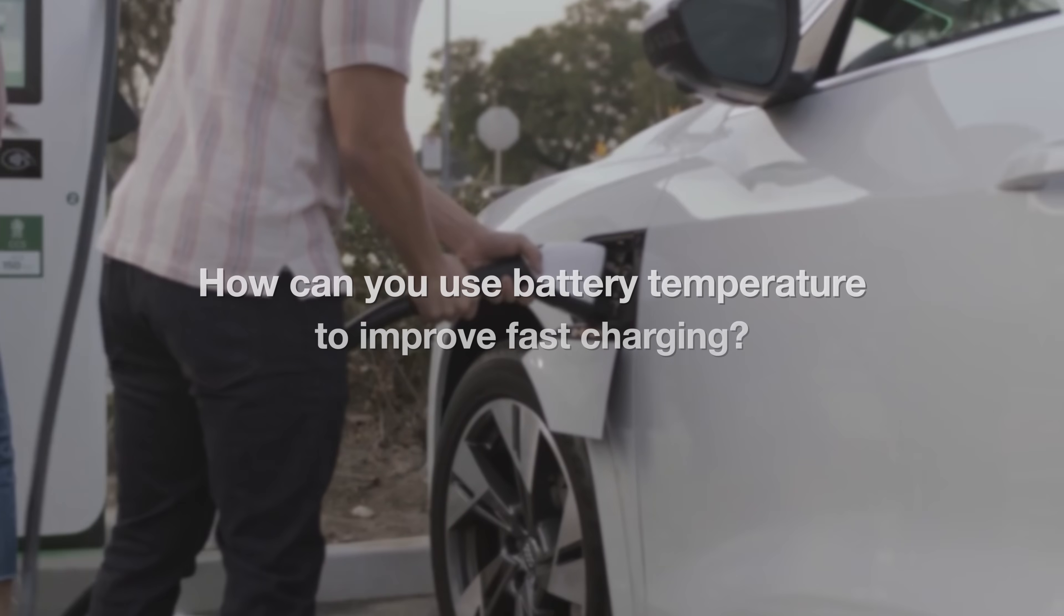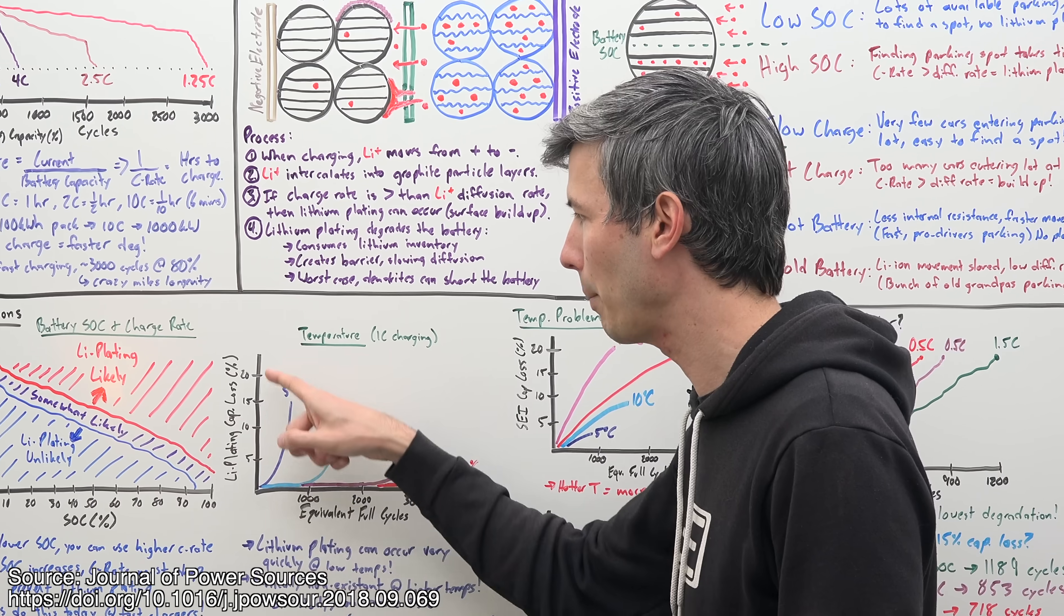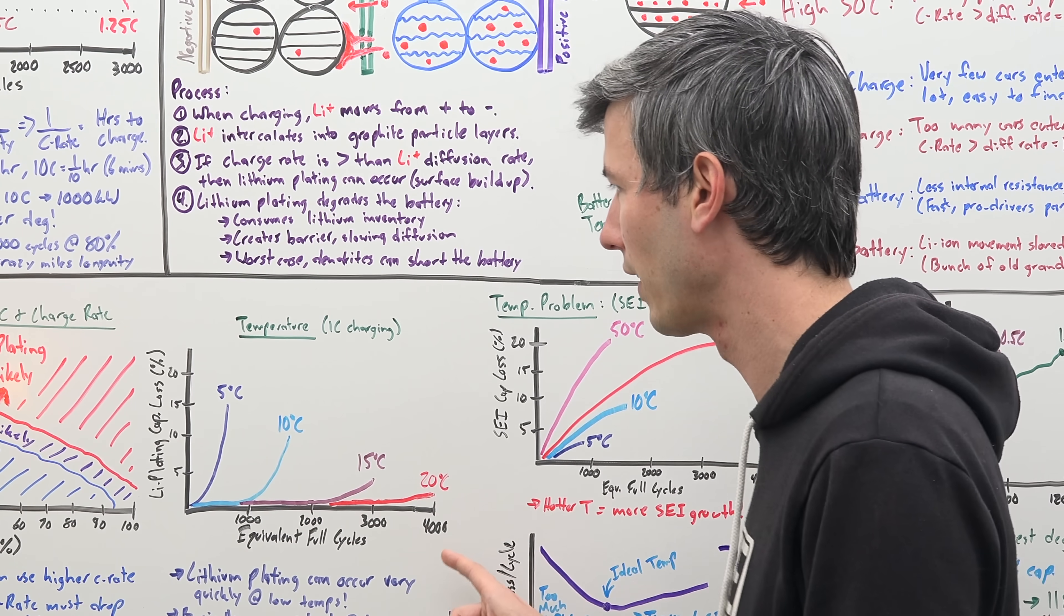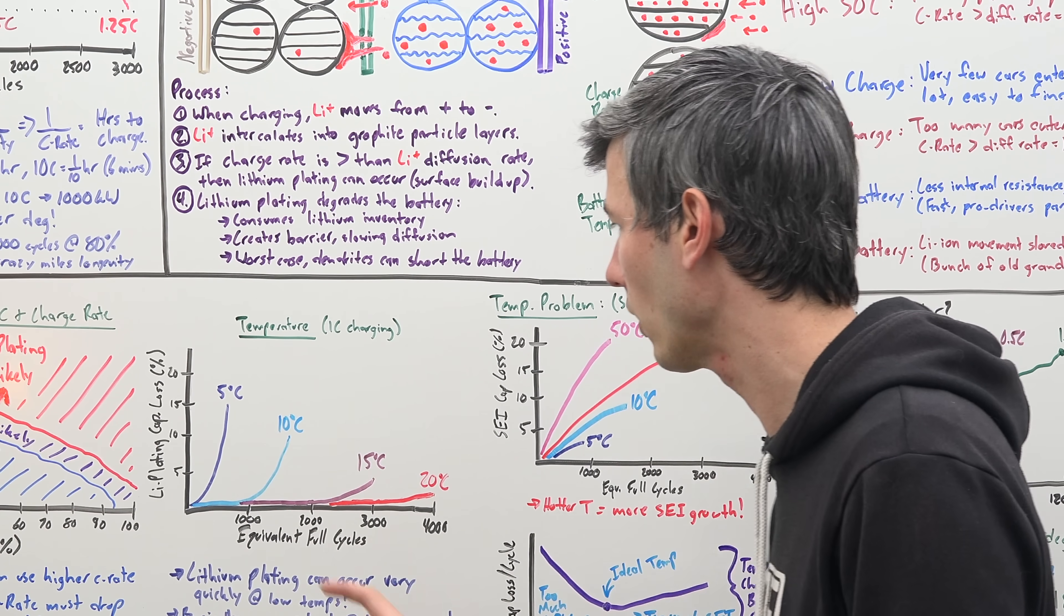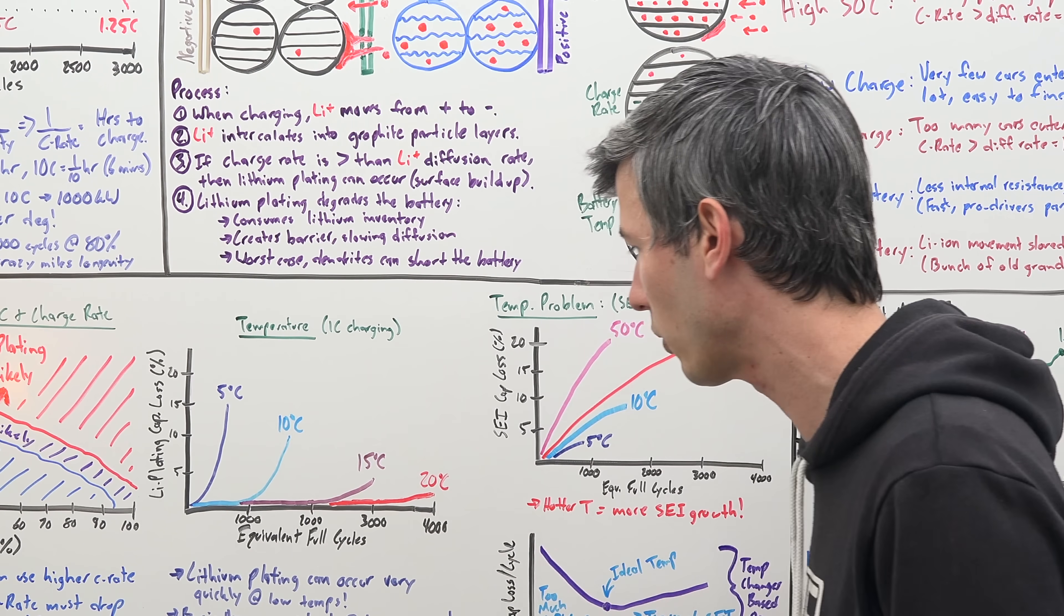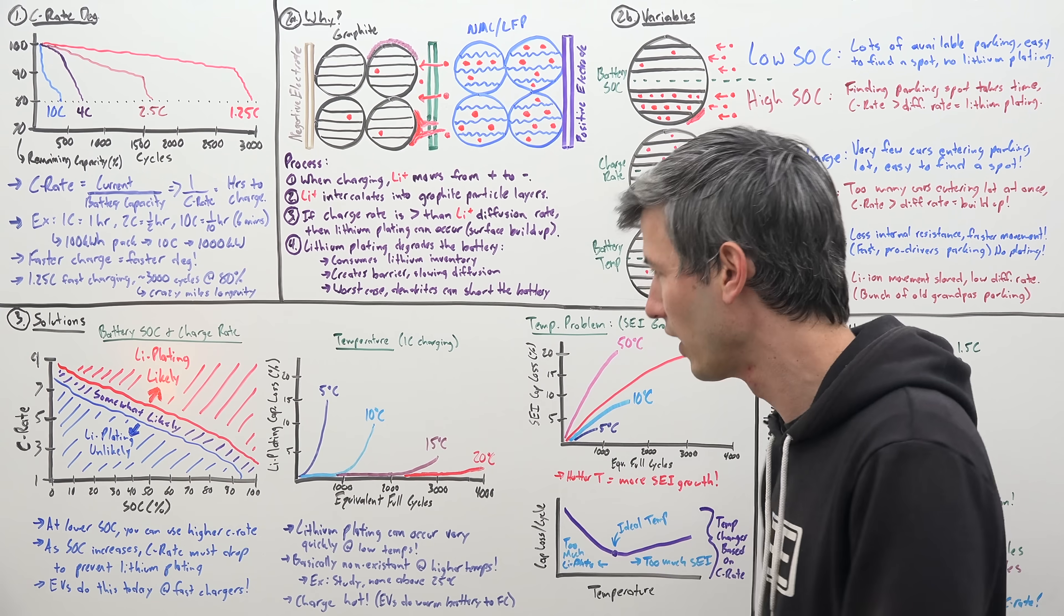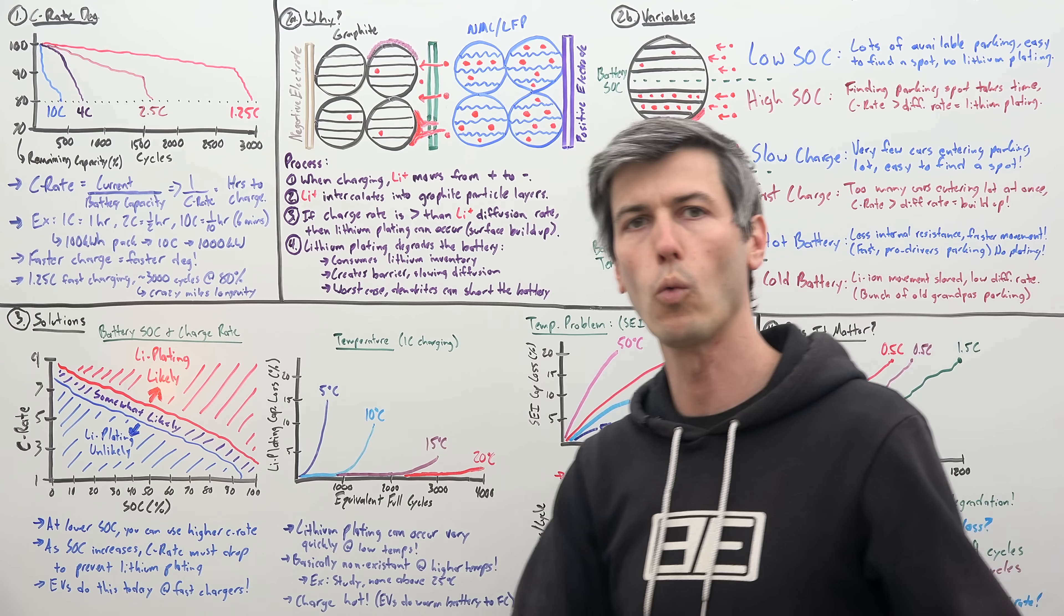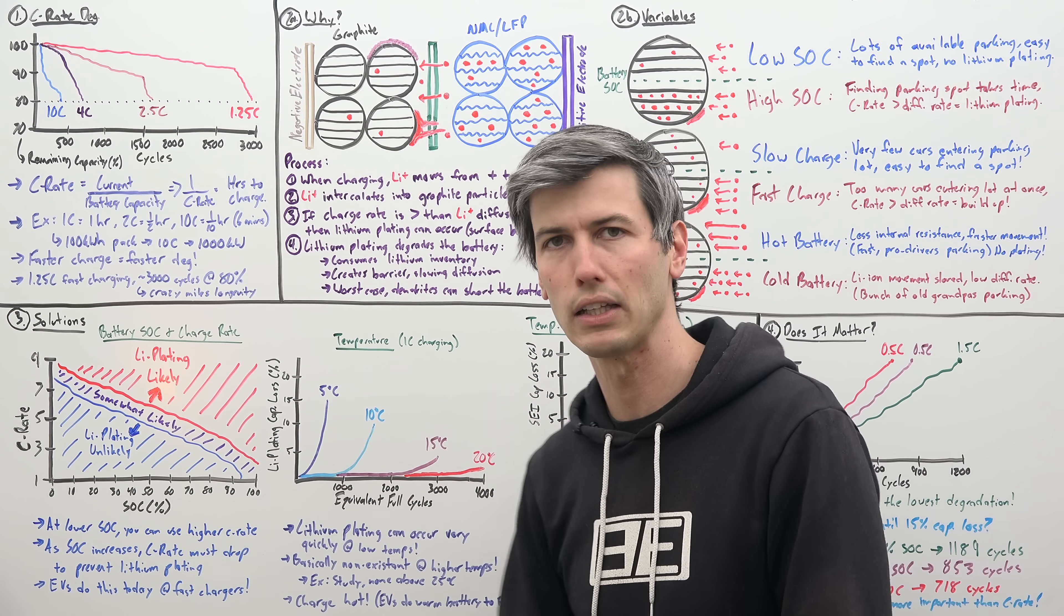So what can we do with our next variable temperature in order to improve fast charging? So a study looked at the effects of temperature on lithium plating. So here we're looking at how much capacity has been lost from the battery just from lithium plating. And on the bottom, we're looking at how many equivalent full cycles do we have? And you can see that the lower the temperature that we're charging at, it has a huge impact on lithium plating capacity loss versus if you charge at warmer temperatures like 20 degrees Celsius, well, it's very low. We're getting past 3,000 equivalent full cycles here. And they found above about 25 degrees Celsius, they didn't see any lithium plating causing any capacity loss. So the simple solution, charge at a hotter temperature. And that's exactly what EVs do. They bring up the battery pack temperature when you're arriving to that supercharging station, to that fast charging station, so that you can charge at a faster rate without having lithium plating occur.